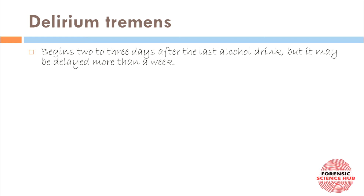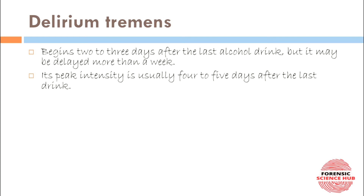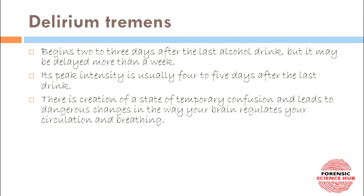Delirium tremens starts two to three or four days after the last alcoholic drink, but may also be delayed up to a week. This is the most serious form of withdrawal symptom. Its peak intensity is usually four to five days after the last drink. It creates a state of temporary confusion, which leads to dangerous changes in the body.